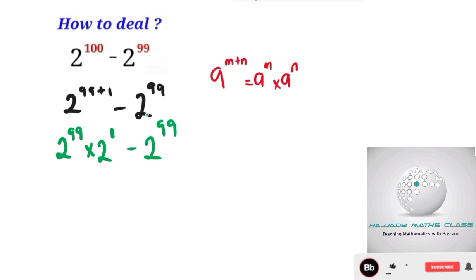So with this, we can factor out 2 to the power of 99 which is common to both sides. So for us to factor that out, we are going to have 2 to the power of 99. So we have 2 to the power of 1 which is 2, minus 1.